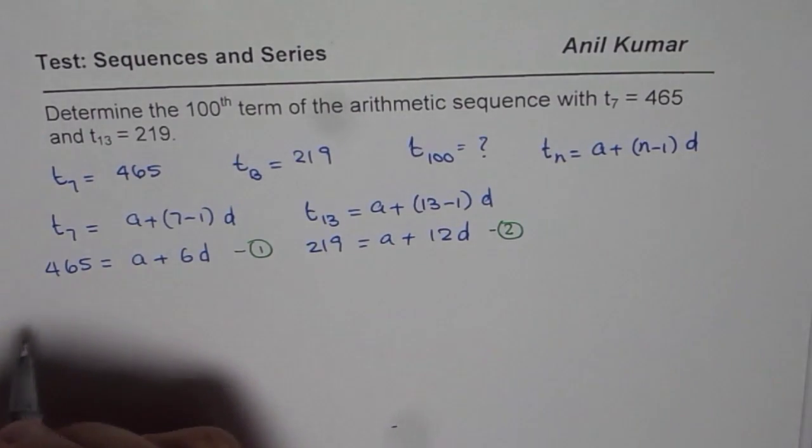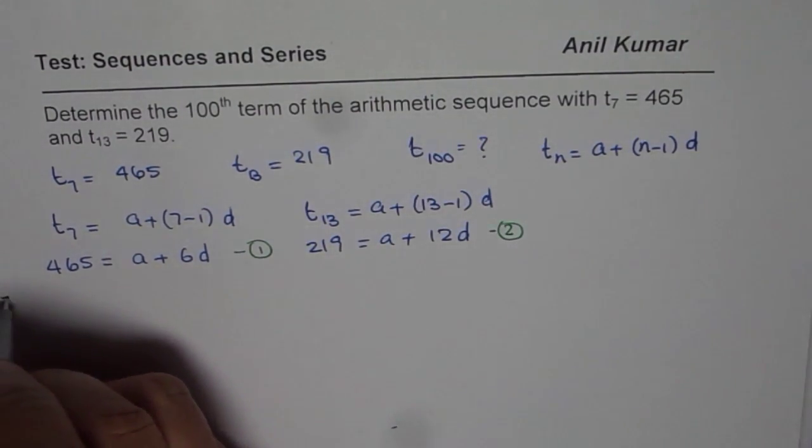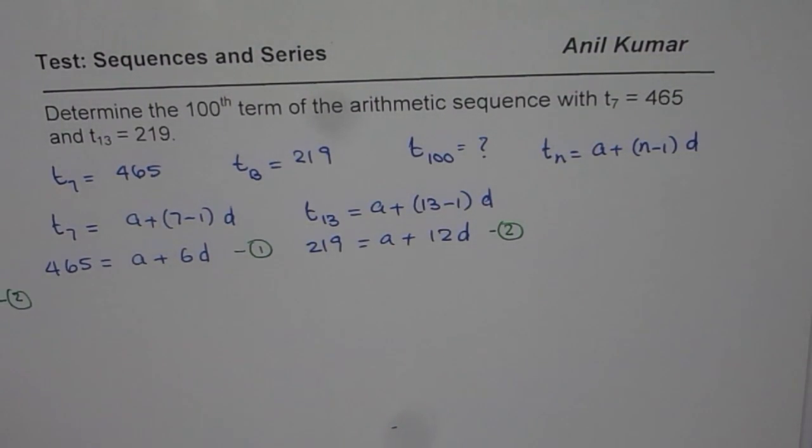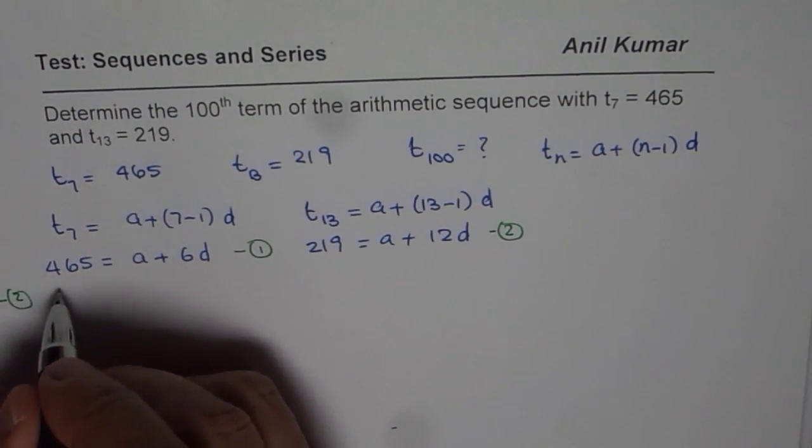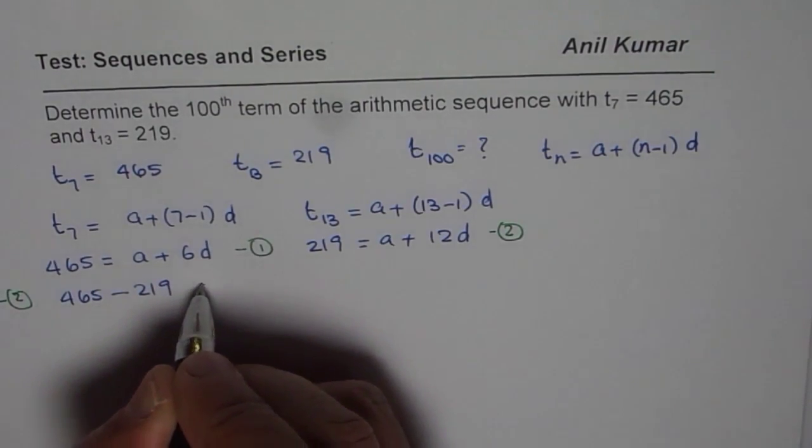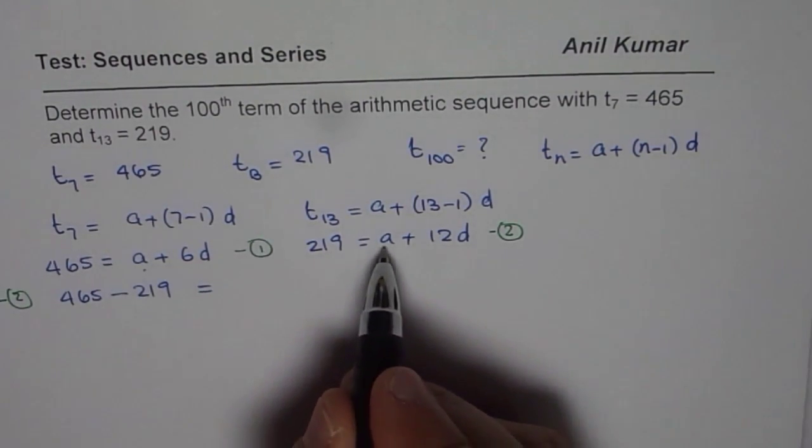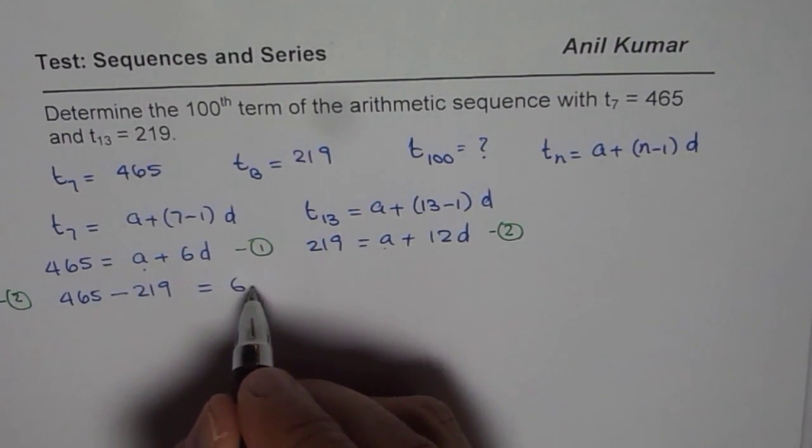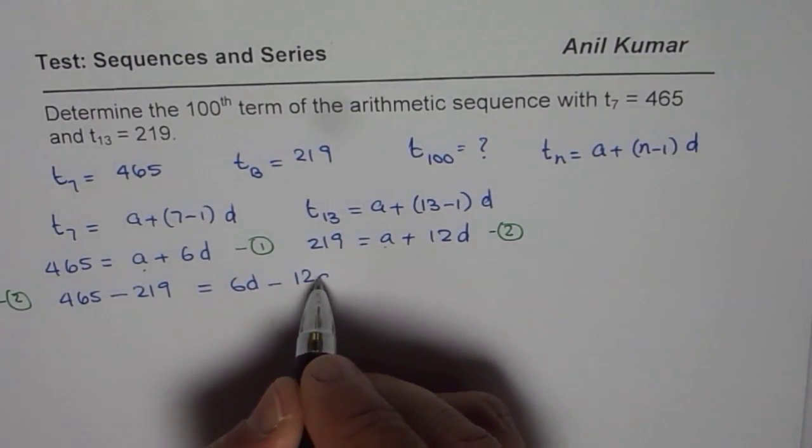Now if I do equation 1 minus equation 2, what do I get? I get 465 minus 219, right, equals A minus A, which is 0. I get 6D minus 12D.